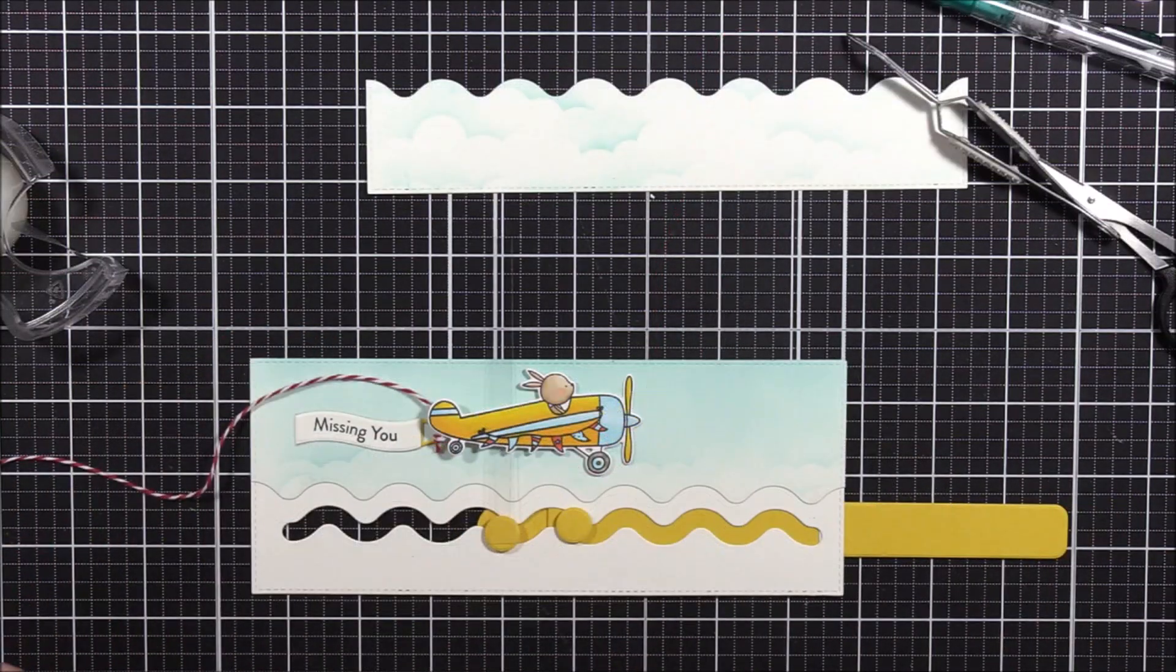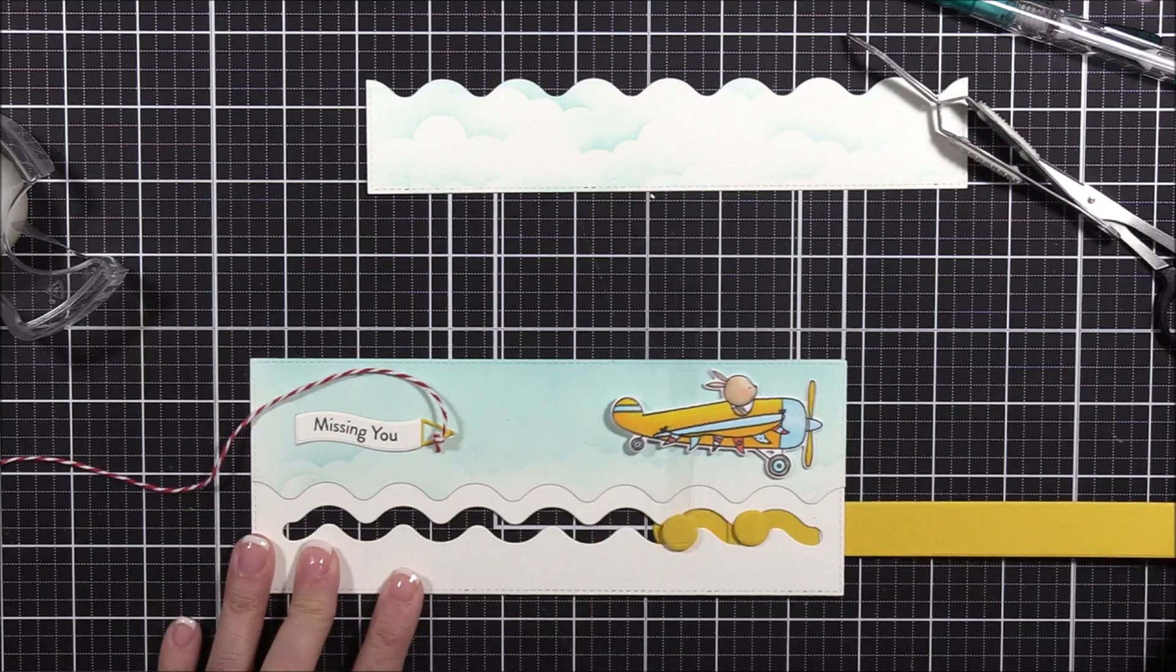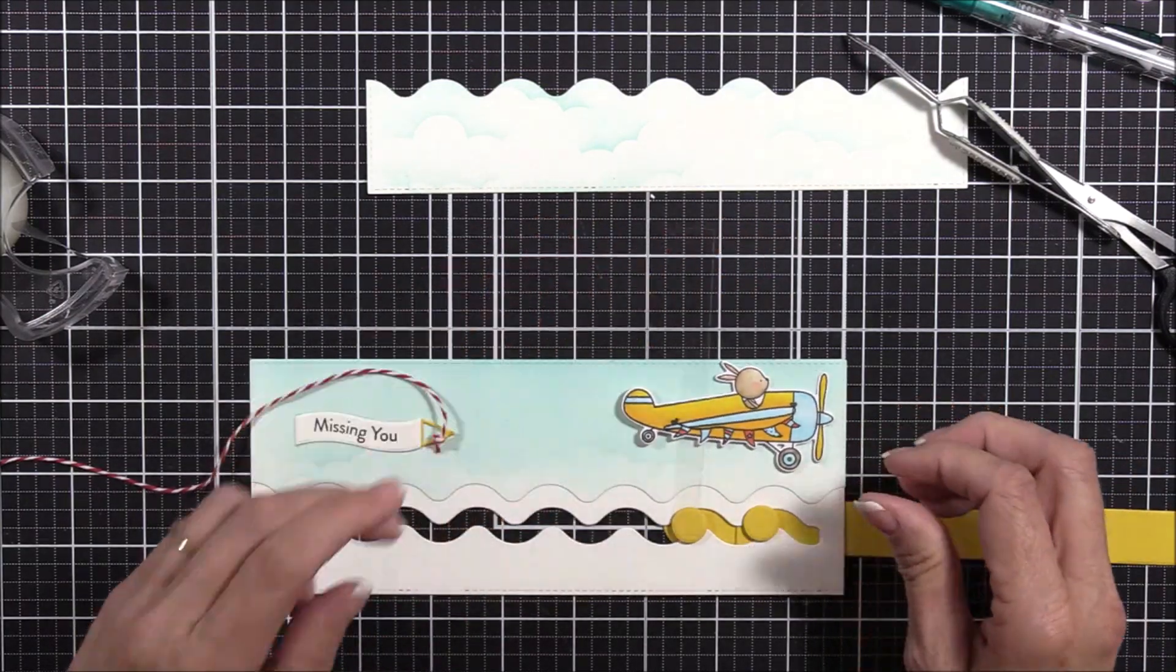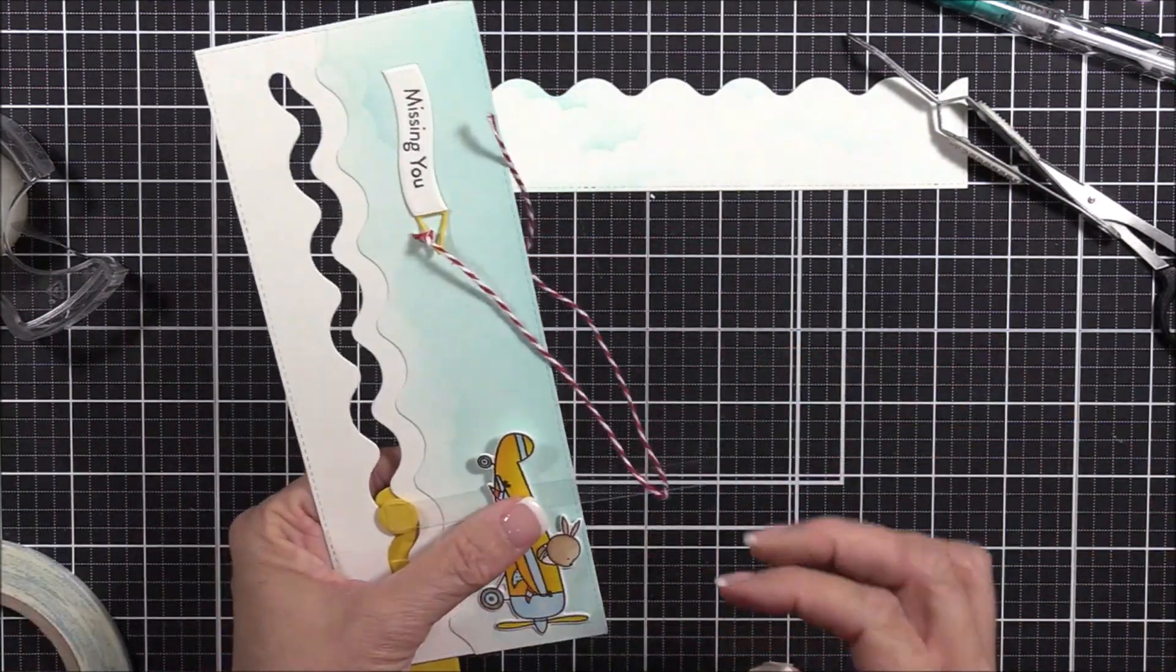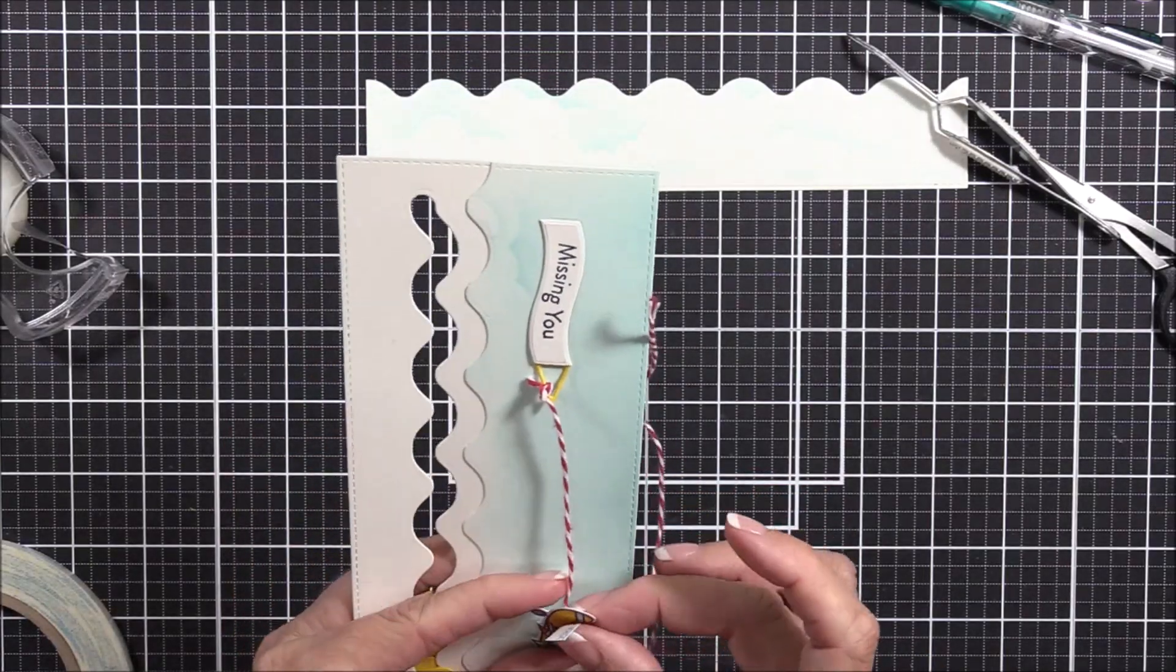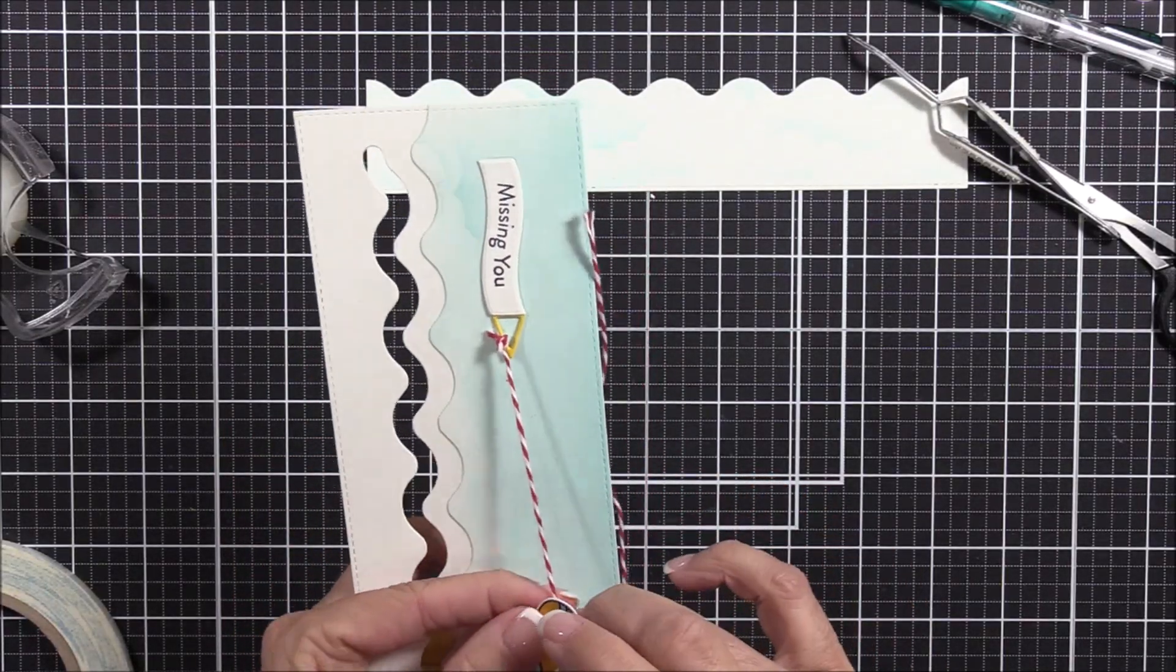I'll secure the other end of the Baker's twine to the tail of the airplane with some double-sided tape. It was a little bit of a fussy process to get both ends of the twine attached securely, but the end result was well worth the effort.